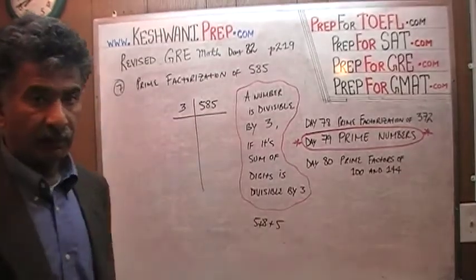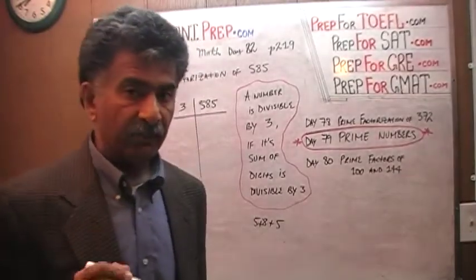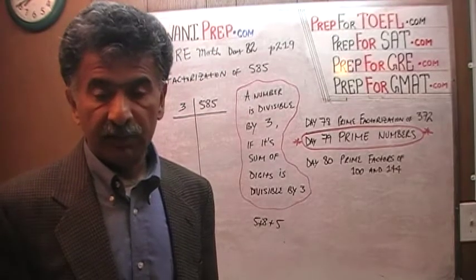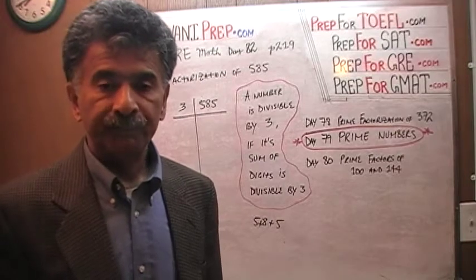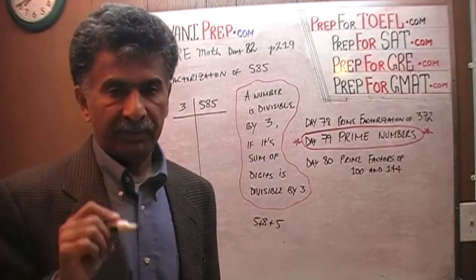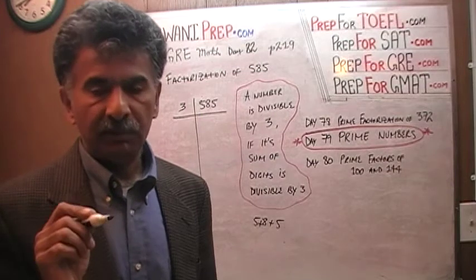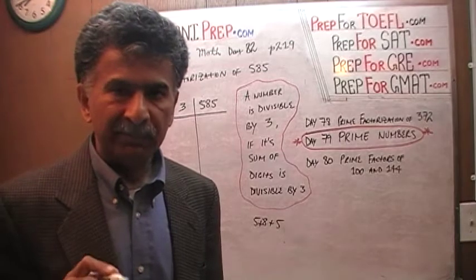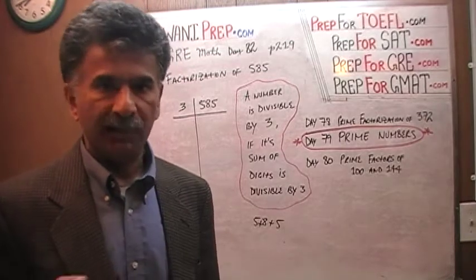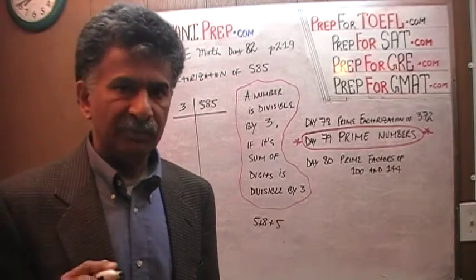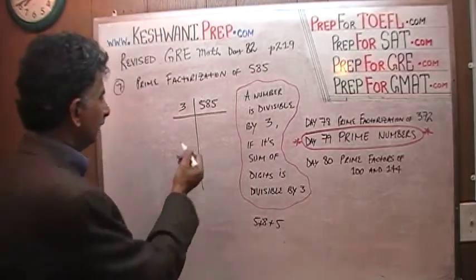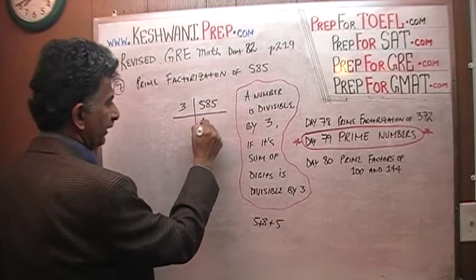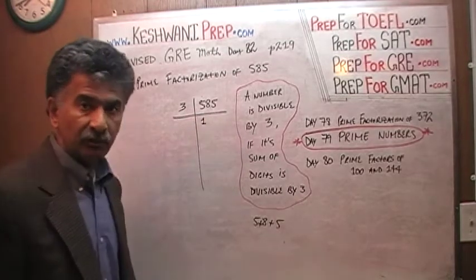So that's how we find prime factorization. Always divide by the lowest possible number that you can find — don't worry about whether it's a prime number, it will happen automatically. Find the lowest number that you can find. 3 is the lowest one, not 5. So, how many 3's in a 5? 5 has one 3. The remaining 2 goes and joins this guy, becomes 28.